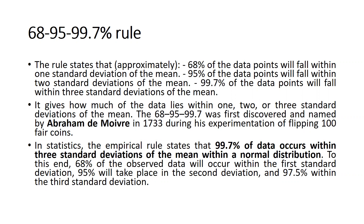In statistics, the empirical rule states that 99.7% of data occurs within three standard deviations of the mean within a normal distribution. To this end, 68% of the observed data will occur within the first standard deviation, 95% will take place within the second standard deviation, and 99.7% within the third standard deviation.